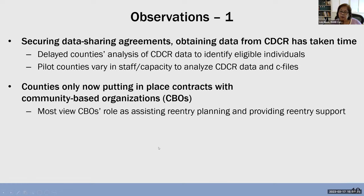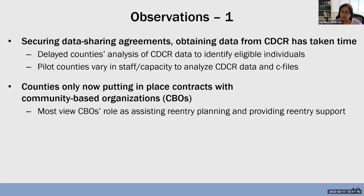Counties were each given the same pot of money — $350,000 — to contract with community-based organizations, whether you're LA County or a small county like Yolo or Humboldt. Most of the counties viewed the role of CBOs as assisting with reentry planning and providing reentry supports. But counties are struggling somewhat to put these CBO contracts into place. Small counties, not surprisingly, have limited options in terms of contracting with local resources.